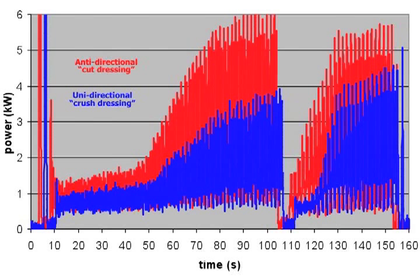And what we did was we just changed the direction of the roll. So instead of going anti-directional, we went unidirectional and the result was that the power was cut in half. We cut the power in half, we cut the heat in half, we more or less cut the temperature in half.